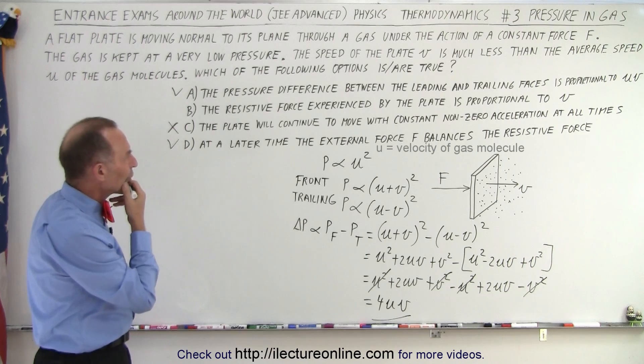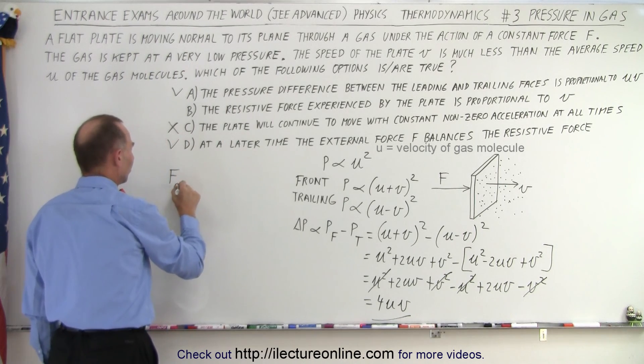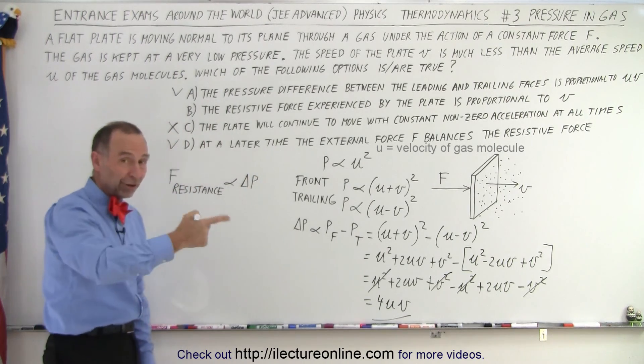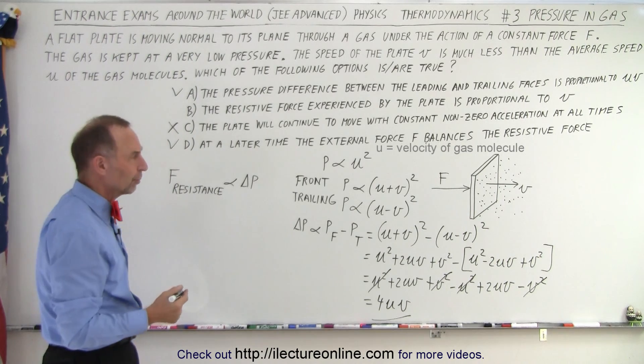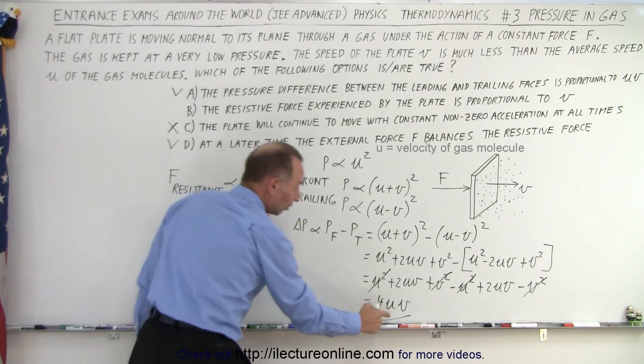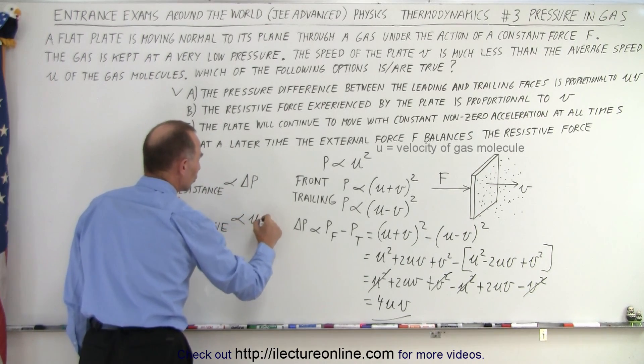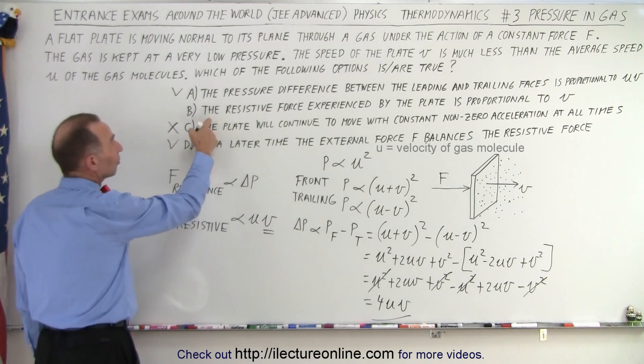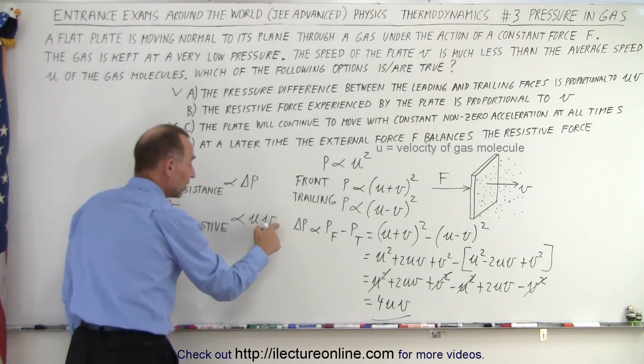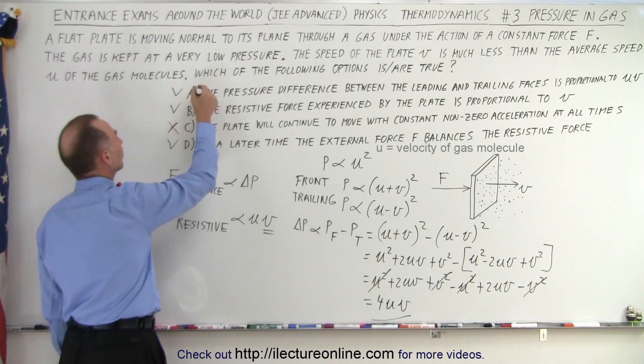What about the resistive force experienced by the plate? Well notice the resistive force is going to be proportional to the change in the pressure. The greater the pressure or the greater the pressure difference, the greater the resistive force, because you have greater pressure in the front, less pressure in the back. And so since the change in pressure is proportional to U times V, that means the resistive force is also proportional to U times V. And of course we can see that the resistive force experienced by the plate is proportional to V, because as V increases, remember U remains constant, but as V increases it's a constant times a change in V. As V goes up, the resistive force goes up. So therefore B is a correct statement as well.